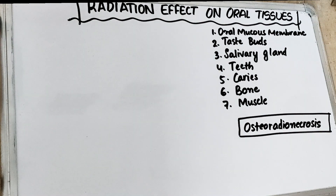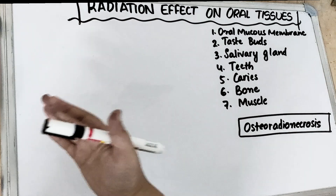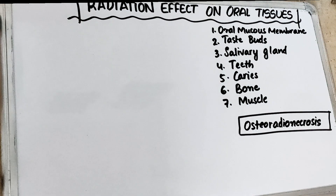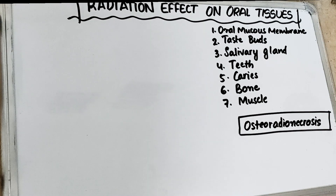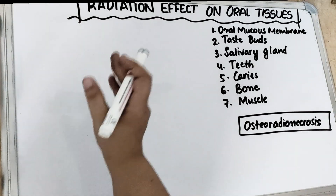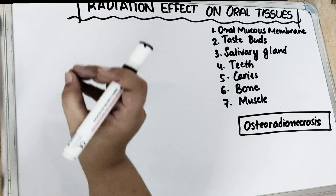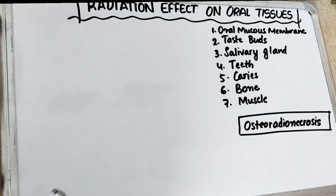Last video we covered general tissues — how radiation affects cell division, how it affects the nucleus, how it affects mitosis, all these things, and the different types of cells. Now it is time that we talk about specific oral tissues.